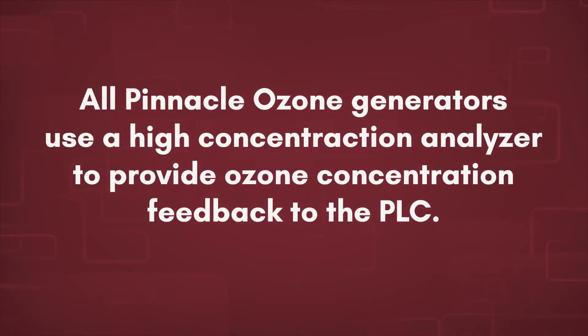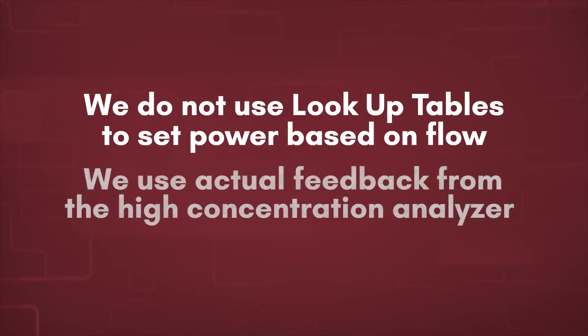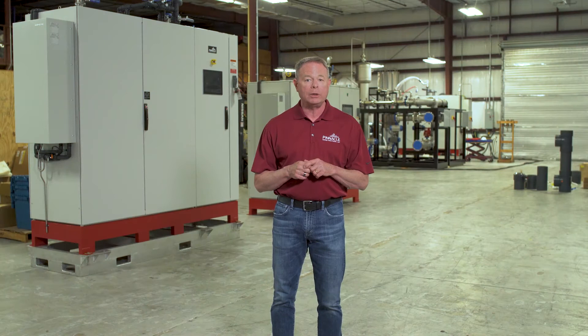All Pinnacle ozone generators use a high concentration analyzer to provide ozone concentration feedback to the PLC. Our control program adjusts the ozone generator power to hold the ozone concentration at a constant level as the flow is ramped up and down. We don't use lookup tables to set power based on flow. We use actual feedback from the high concentration analyzer to provide precise, accurate delivery of a constant concentration of ozone output.